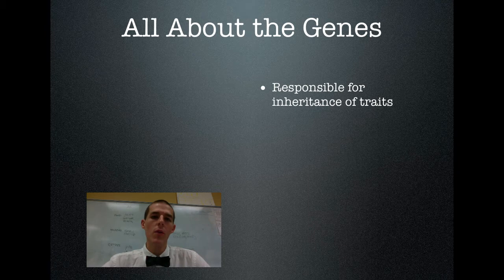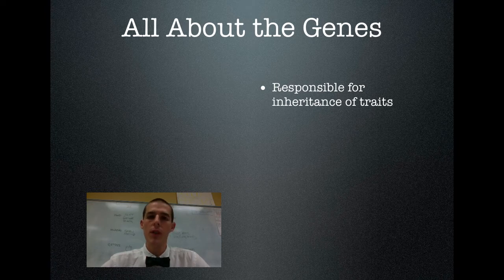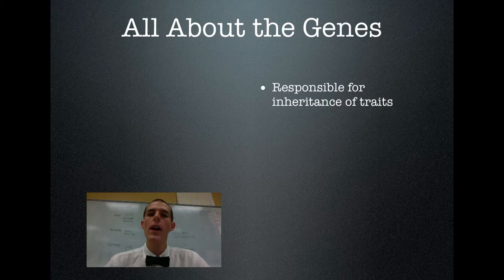That code, when your body gets a hold of that, reads that information and then builds the trait that is correlated with that code that is just read. So kind of like your brain comes up with a mental image after you see a word, your body comes up with a trait after it reads the code carried in a gene.